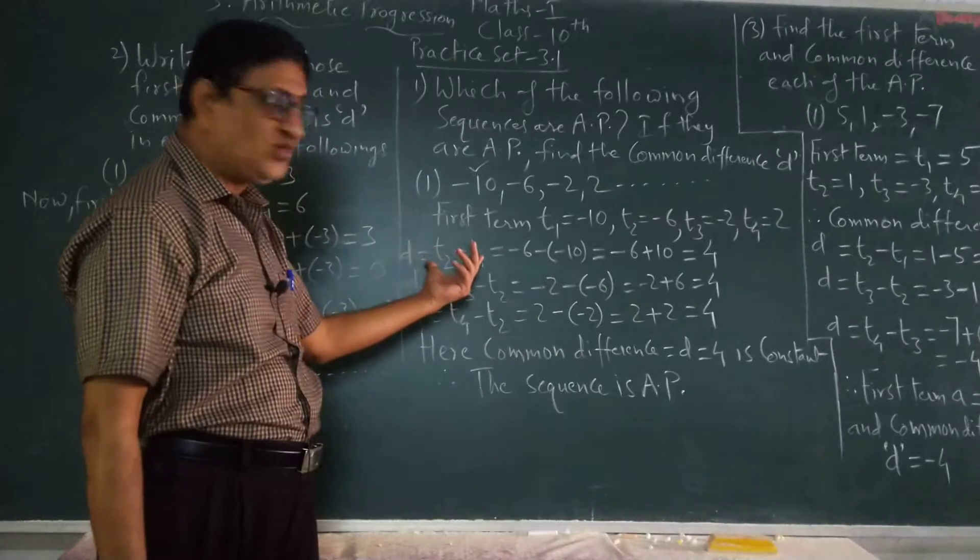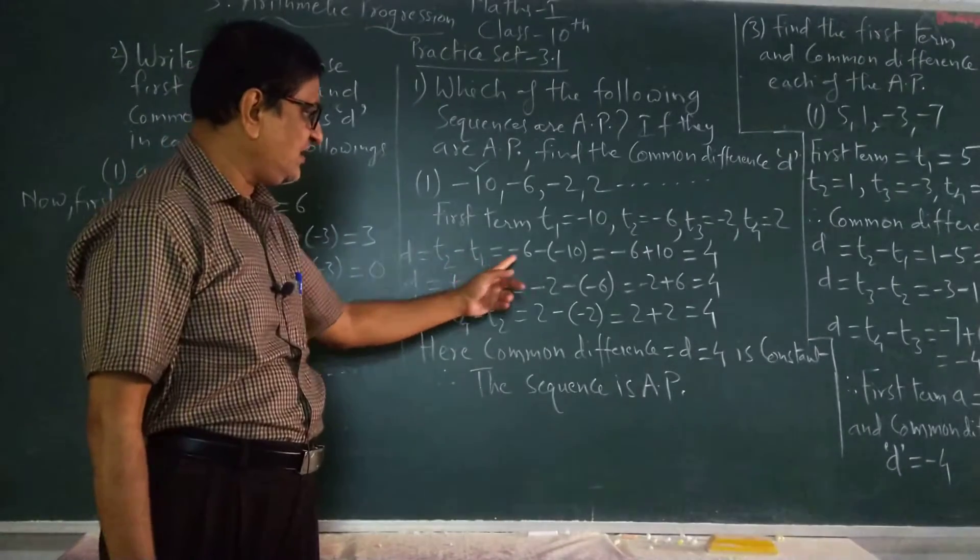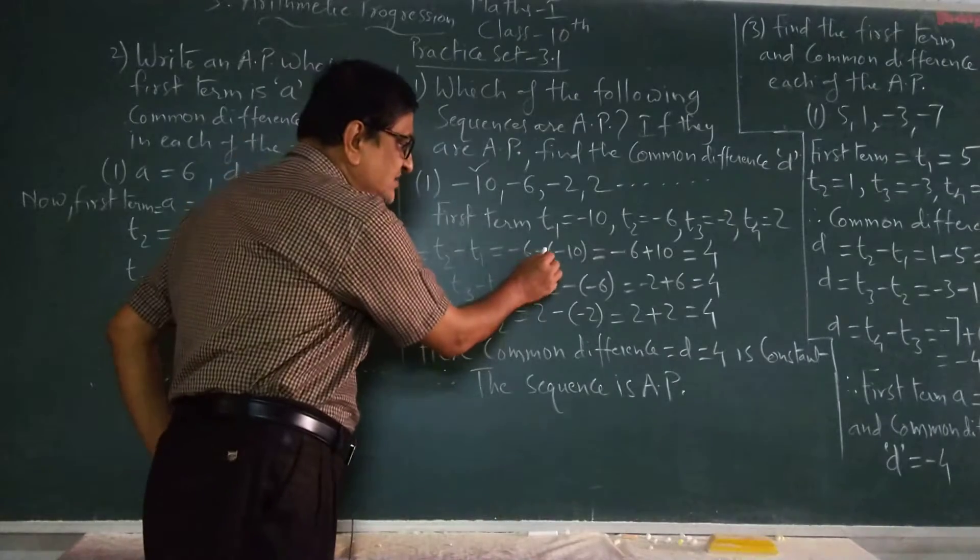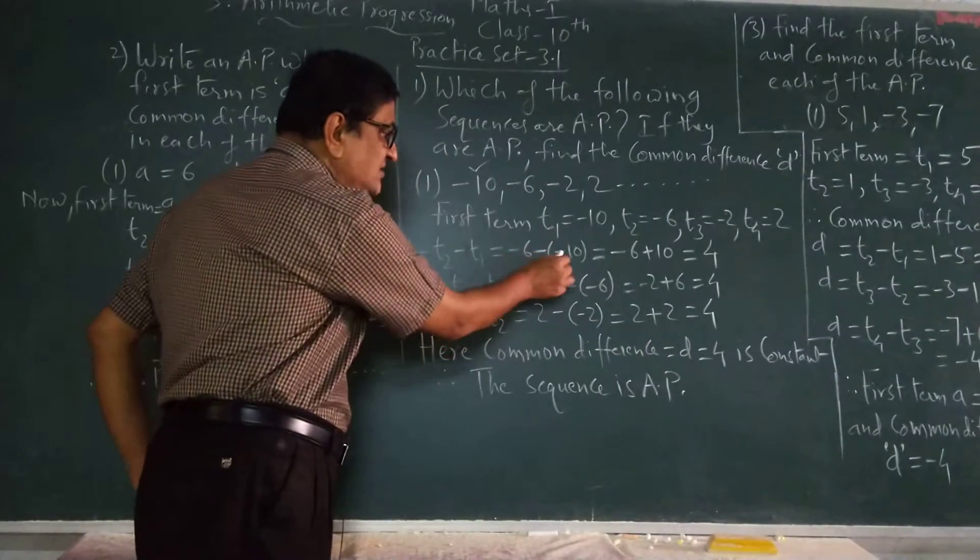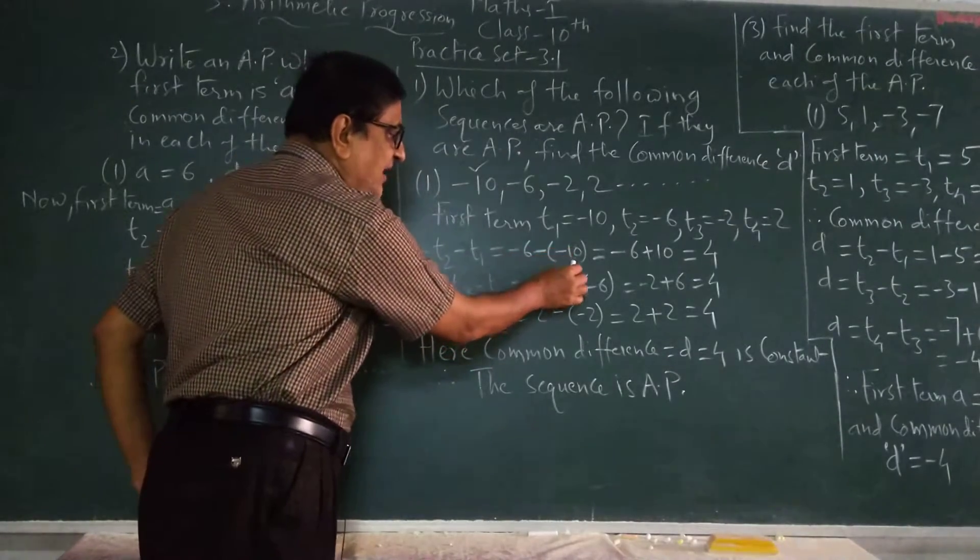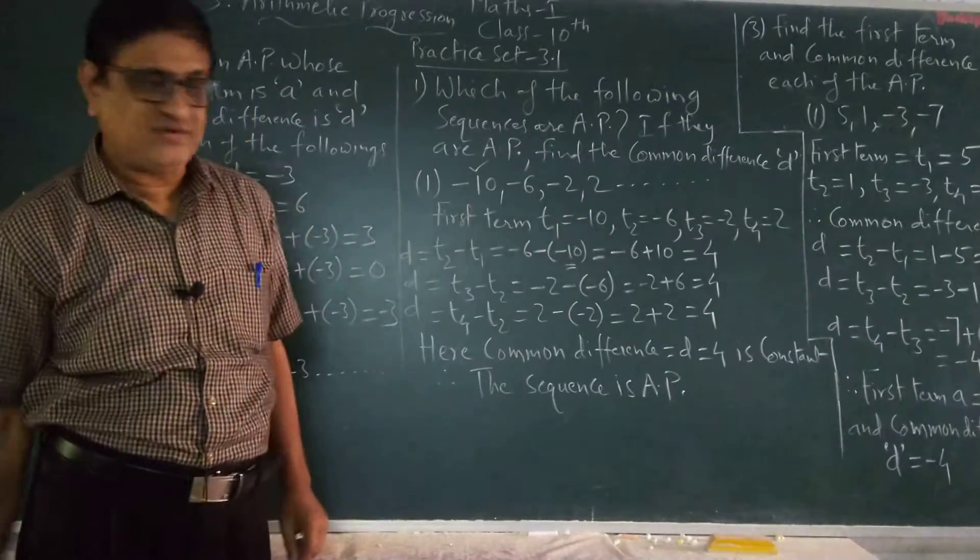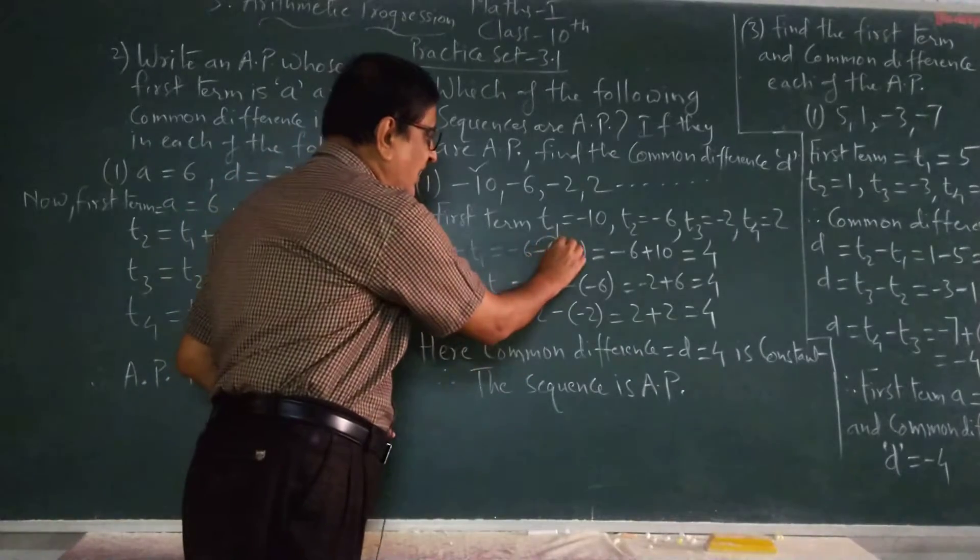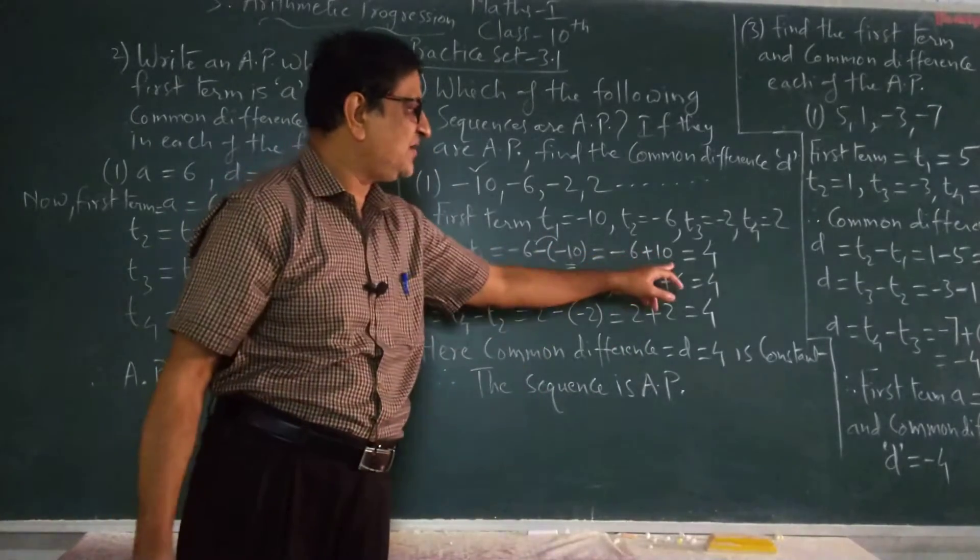Difference between the two terms, that is T2 minus T1. Now here is minus 6 minus minus 10. This minus number is minus 6, minus of minus. What is this? Plus. So minus 6 plus 10.